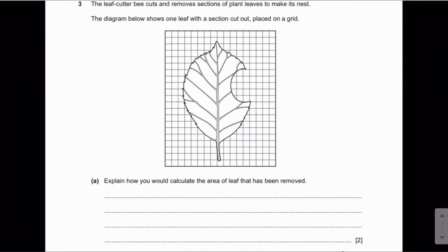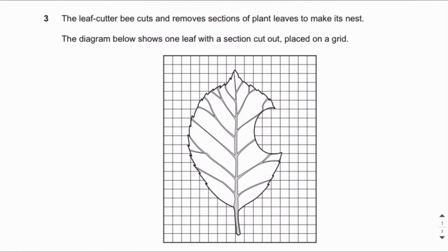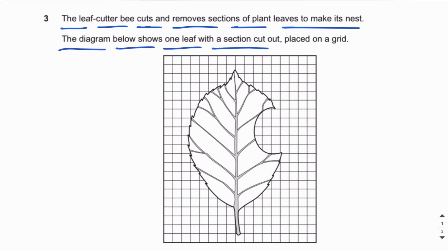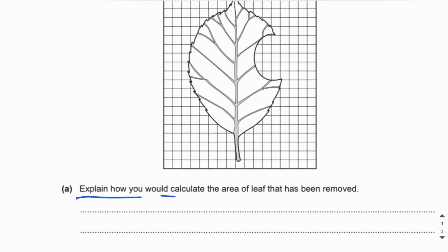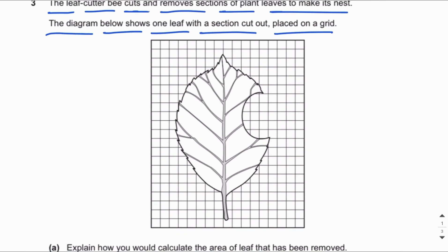Asalaamu Alaikum everyone. In this video lecture we will be learning the skill of calculating the area of a particular structure, for example a leaf, using a square grid. The question states: the leaf cutter bee cuts and removes sections of plant leaves to make its nest. The diagram shows one leaf with a section cut out, placed on a grid.